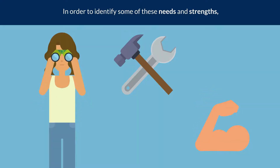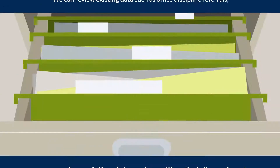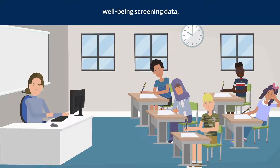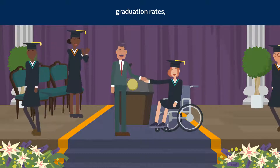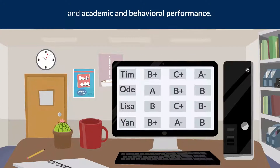In order to identify some of these needs and strengths, we can review existing data such as office discipline referrals, well-being screening data, graduation rates, and academic and behavioral performance.